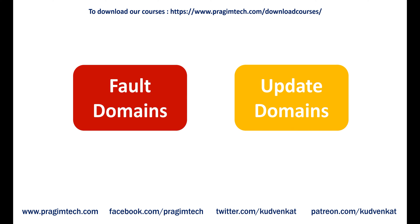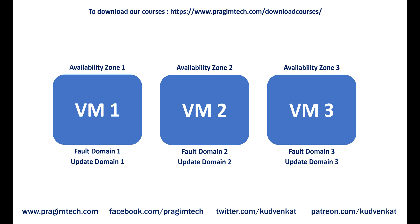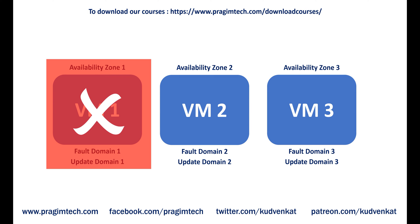For example, if you create three virtual machines across three zones in an Azure region, your virtual machines are effectively distributed across three fault domains and three update domains. If there is a power failure, equipment failure, or some other fault in availability zone 1, only availability zone 1 is affected. As the availability zones are physically separated from each other, faults from one availability zone are not spread to the other availability zones. Since we have three availability zones, it's like we have three separate fault domains. If availability zone 1 is down, we still have our virtual machine available from availability zones 2 and 3.